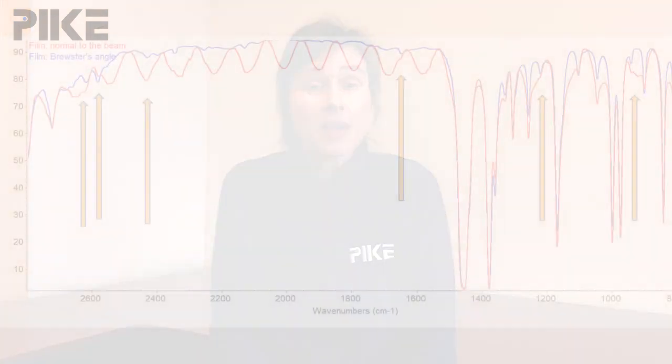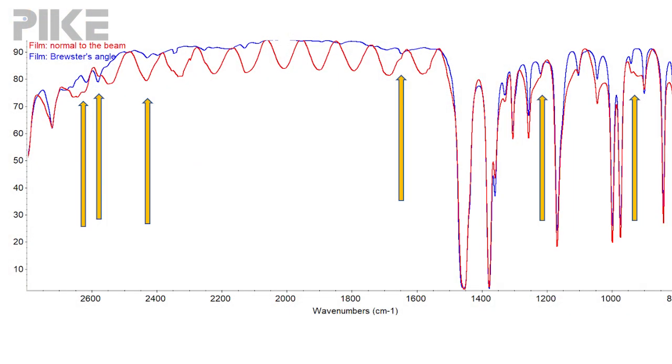Let's take one closer look at the fingerprint region, where we can point out a couple of places where the fringing pattern is actually obscuring some absorbance bands — I've called those out with yellow arrows. So there's your tip this week, thanks for watching, and we'll see you next time.